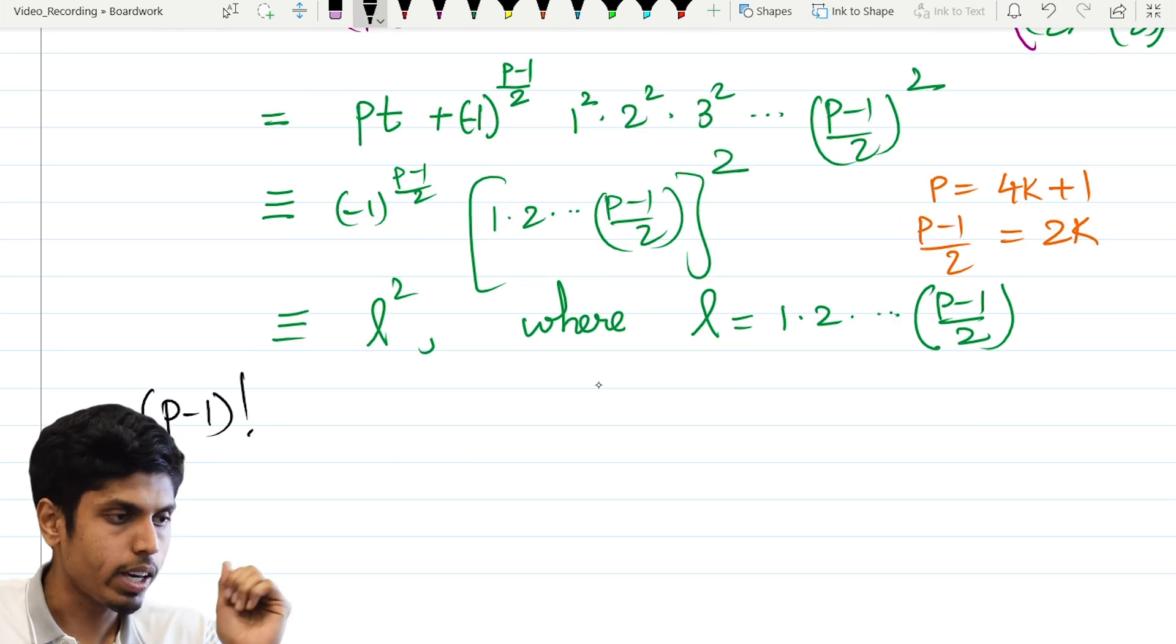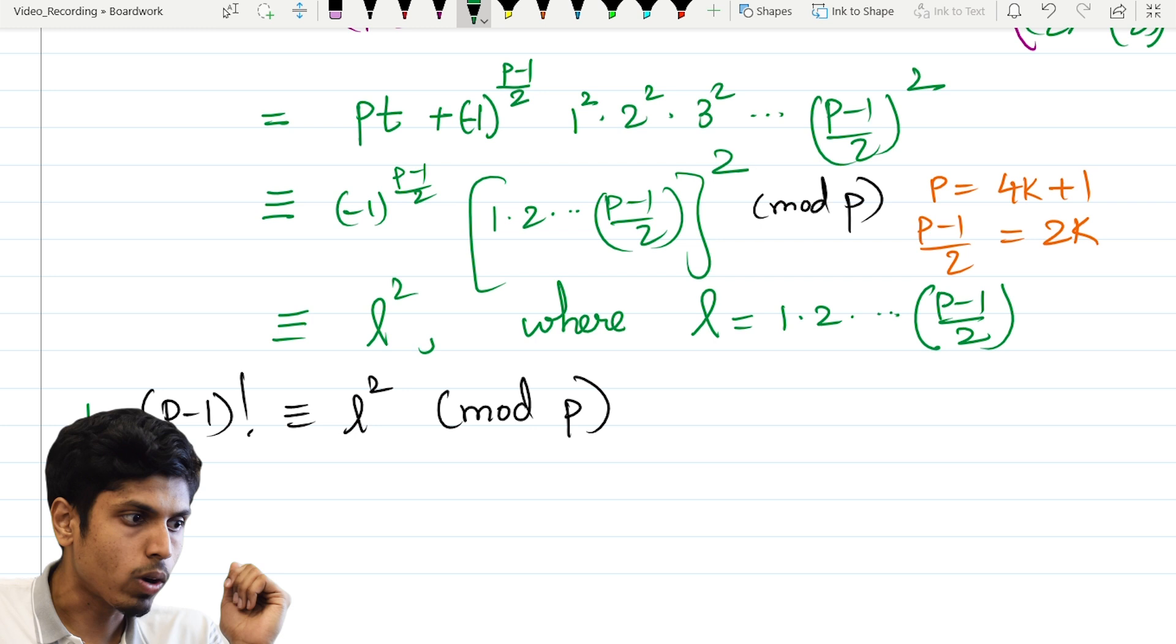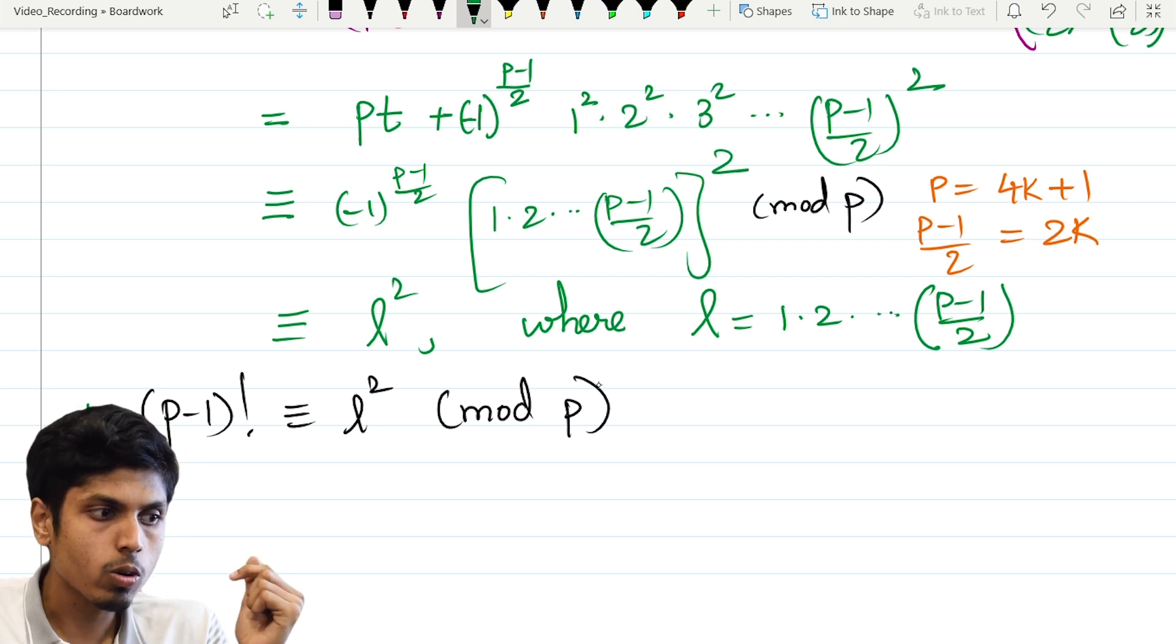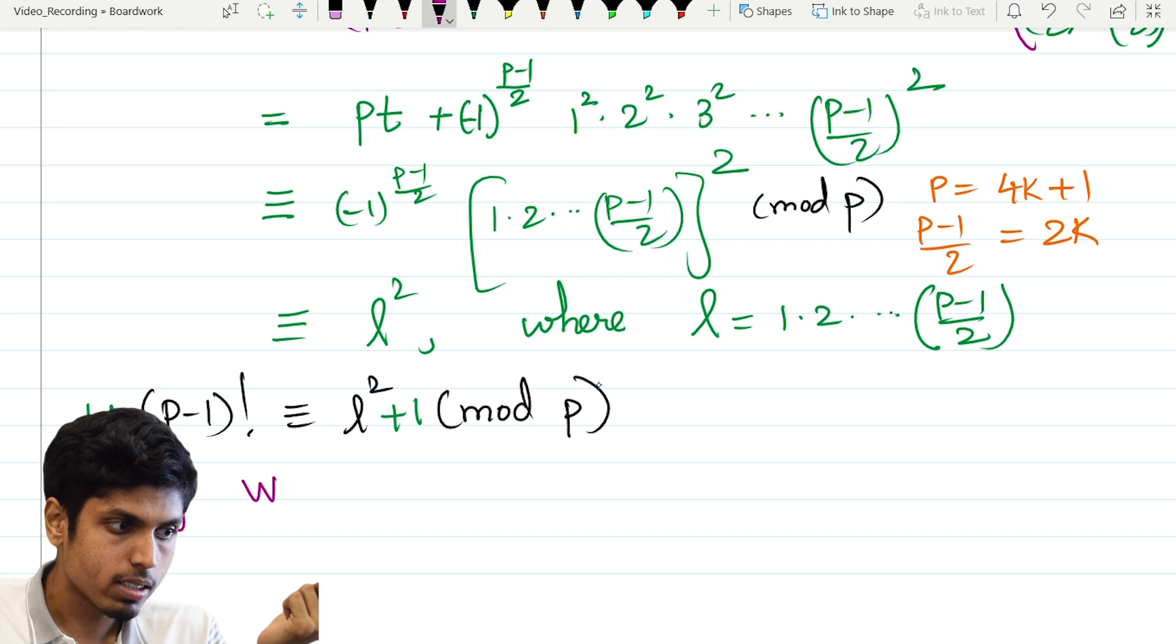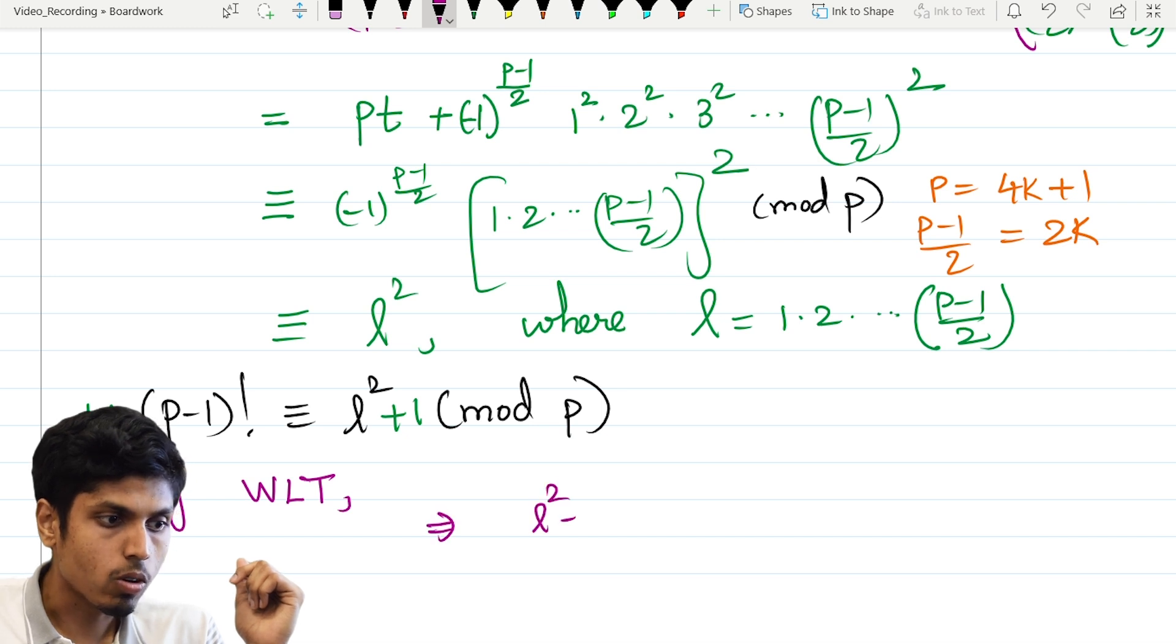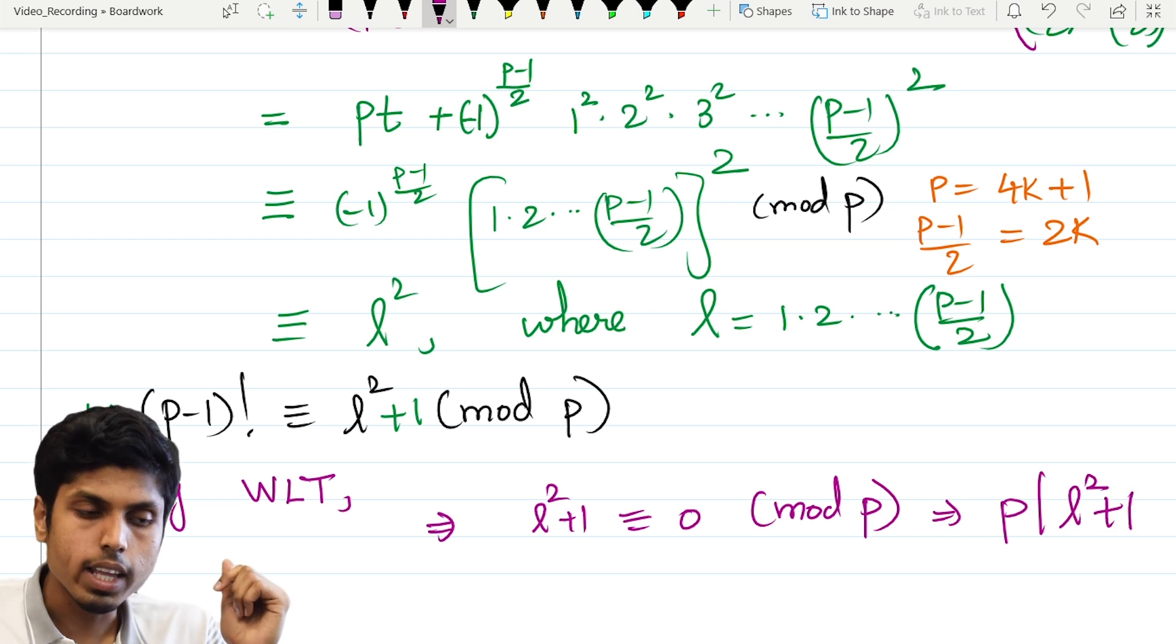It's very easy now. We have p minus 1 factorial congruent to l square mod p, right? Remember, the congruency was taken mod p. So if you add 1 both sides, you would get 1 plus p minus 1 factorial is congruent to l square plus 1. But by Wilson's theorem, I know that p minus 1 factorial plus 1 is congruent to 0. So that implies l square plus 1 is congruent to 0 mod p. That implies p divides l square plus 1 and there exists such a number l with l square plus 1 divisible by p.